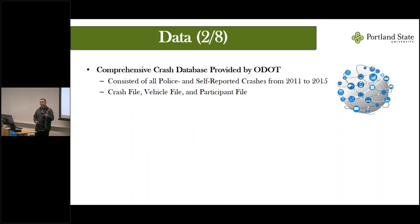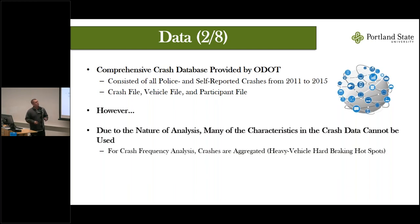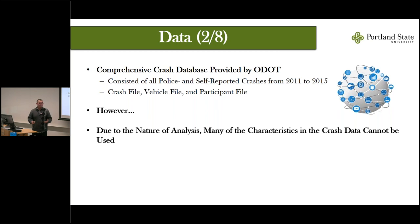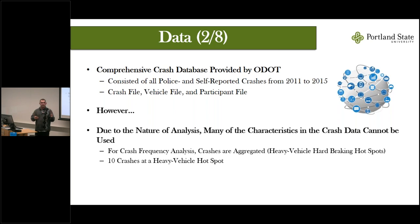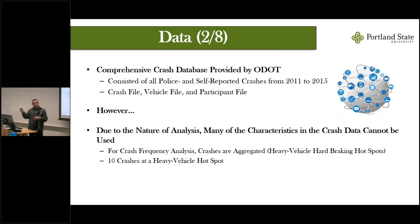Due to the nature of a crash frequency analysis, several characteristics can't be used. We aggregate crashes to a location — in this case, a heavy vehicle hard braking hot spot. For example, if we have 10 crashes at a location, we take those 10 observations and aggregate them to a single observation, creating a frequency variable with a value of 10. This means we're unable to use characteristics related to the driver, weather, or lighting conditions, as aggregating those values by mean or median would introduce severe bias.